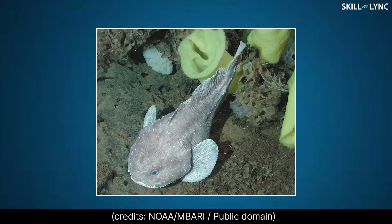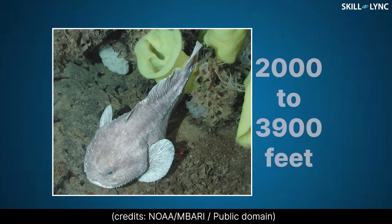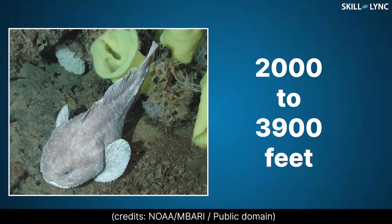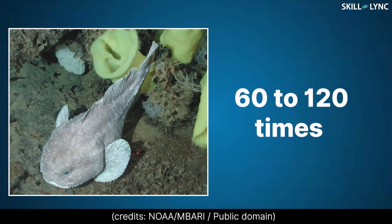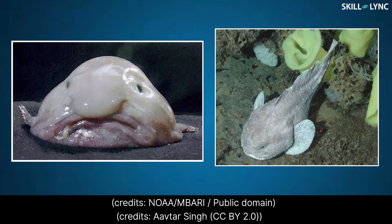What actually happens is that the blobfish lives at depths between 2,000 to 3,900 feet, where the pressure is 60 to 120 times greater than the pressure at sea level. Because of the water pressure, the magnitude of the volumetric stress is more at greater depths than on the surface. Thus, the fish experiences decompression on coming out of such immense pressure.